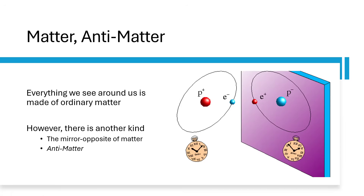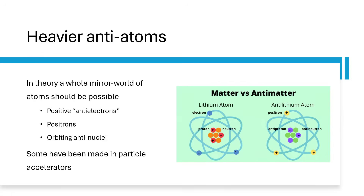We would call an anti-atom with one antiproton in the centre and one antielectron — positron — orbiting around it, an anti-hydrogen atom. But you can create heavier anti-atoms. Next would be anti-helium, and then anti-lithium, and so on. In theory, all such things are possible.